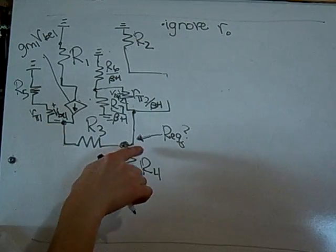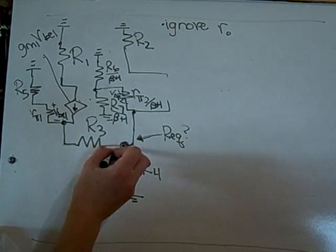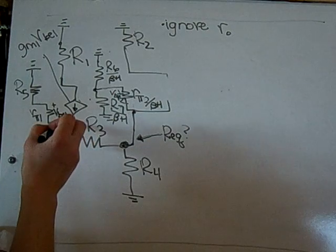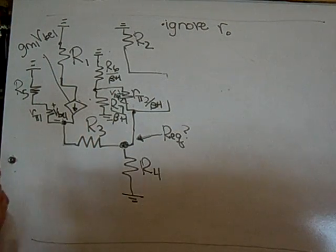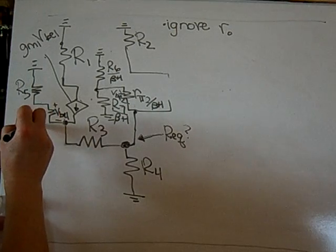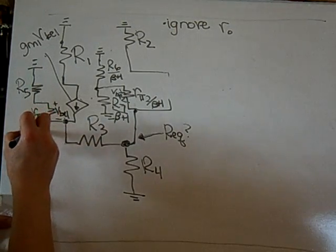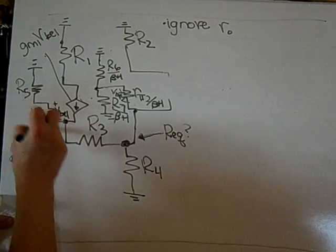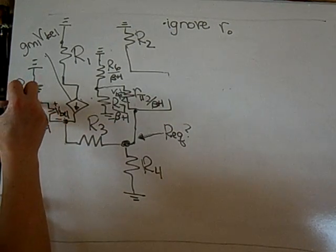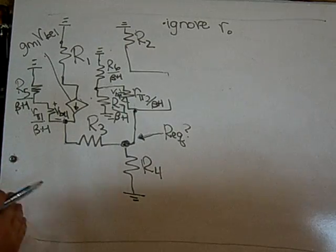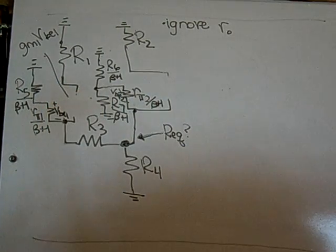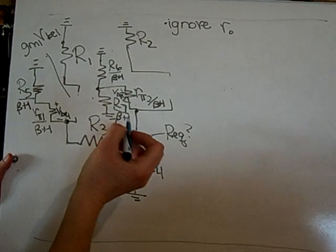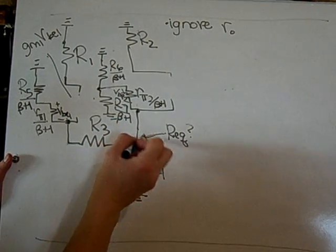Over here, as I go through, these are still emitter resistors for this transistor. That means I need to reflect everything over here by dividing by beta plus 1. That will then remove this transistor's dependent source. You can only remove these for the Thevenin.